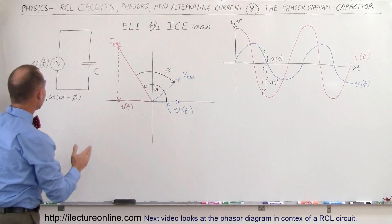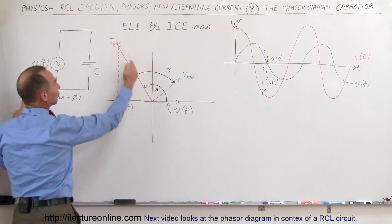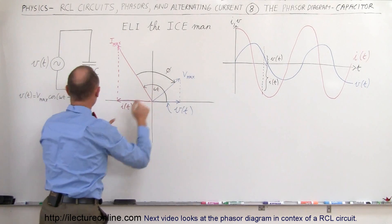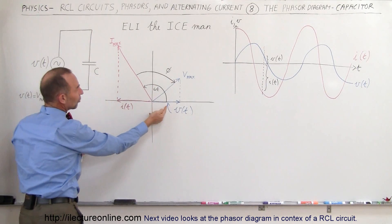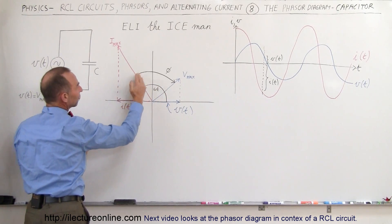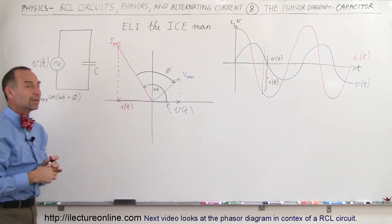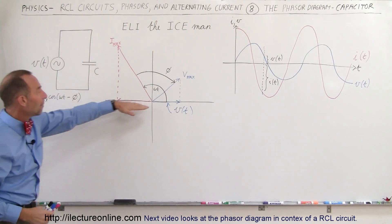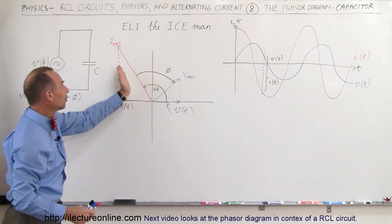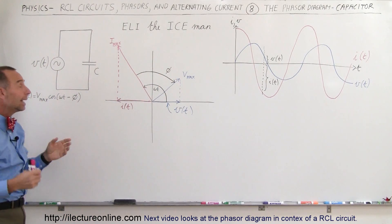Looking at the voltage equation, the voltage relative to the current can be written as Vmax times the cosine of omega t minus the phase angle. Omega t places you at a certain point in the cycle, and then you subtract the phase angle to put you back in phase with the voltage. This quantity represents how much the phase angle has turned through minus the phase difference between where the current is and where the voltage is relative to one another in time.